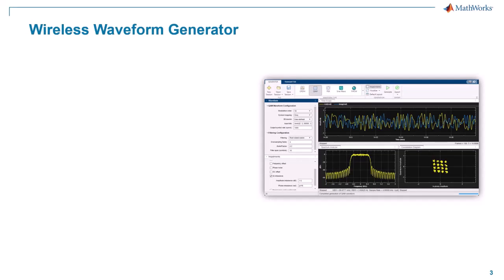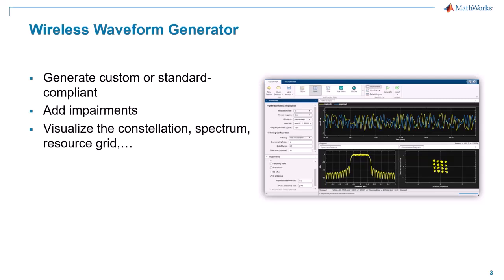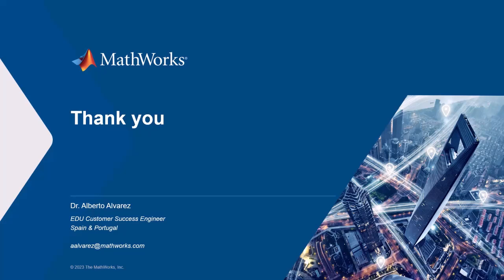As a summary, with the Wireless Waveform Generator app you can generate custom or standard-compliant waveforms, add impairments, visualize the constellation, spectrum, and resource grid, export the waveform to the MATLAB workspace, and finally transmit it if you have the corresponding hardware. That was everything from my side. I hope you enjoyed the video — subscribe to our channel if you like the content, and stay tuned for upcoming videos. See you soon.